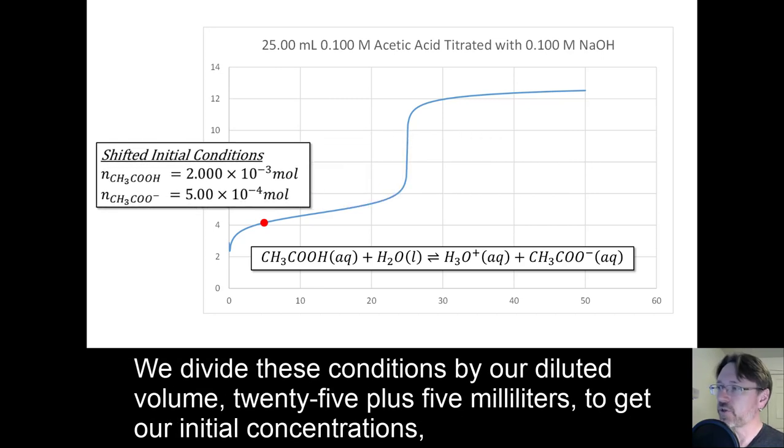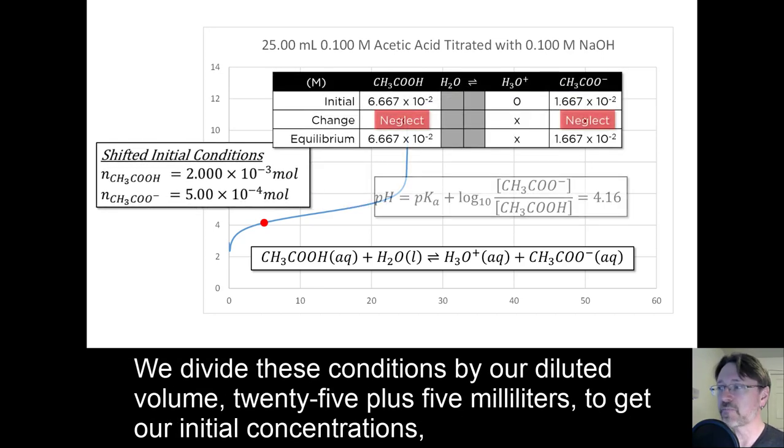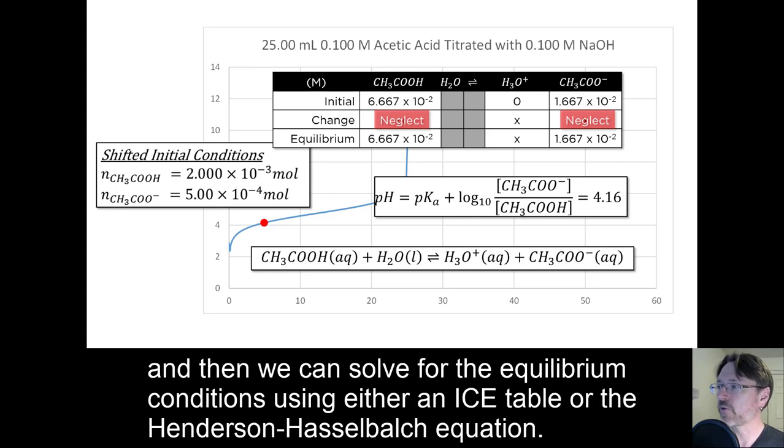We divide these conditions by our diluted volume, 25 plus 5 milliliters, to get our initial concentrations. And then we can solve for the equilibrium conditions using either an ice table or the Henderson-Hasselbalch equation.